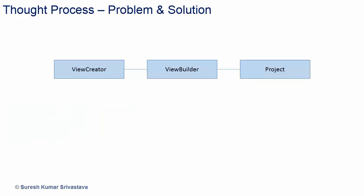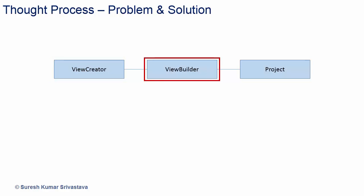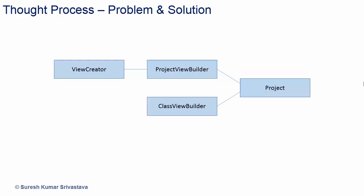So we can have a view creator and a view builder. View creator will have logic for construction of object with different parts. View builder will create the parts of project object and assemble them to form a project object. But again it will be too complex to create different representations of project object in view builder with more and more views and combinations of parts. So we will have one builder for each view — like project view builder for project view and class view builder for class view.